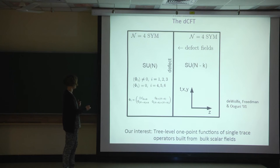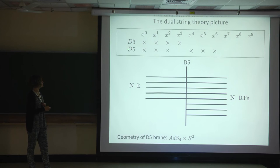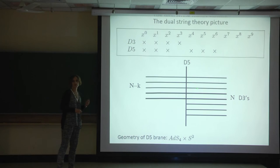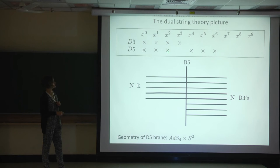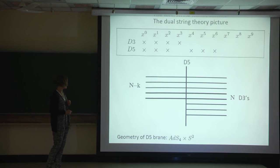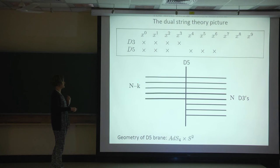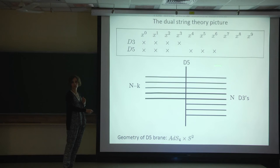Before going into the calculation of expectation values, let me remind you what the dual string theory picture looks like. On the string theory side, we have a probe D5 brane inserted in the AdS5×S5 setup generated by N D3 branes. The geometry of this D5 brane is AdS4×S3, and it shares a three-dimensional world with the four-dimensional space where the super Yang-Mills theory lives, constituting the three-dimensional defect. The setup also has K D3 branes dissolved in the D5 brane, so pictorially you have N-K D3 branes on one side and N on the other side, causing the difference in the size of the two gauge groups.